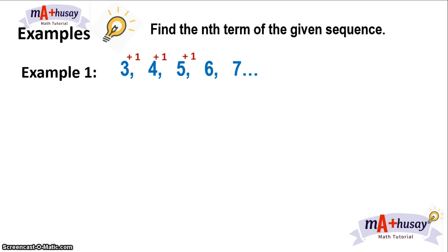So if you have the first term, that's 3, you add 1 and you get 4 — that's the second term. From 4, you add 1, you get 5. Then 5 plus 1 gives you 6, and so on. Since we're adding 1 to get each term, 1 will be the numerical coefficient of n in our general term.